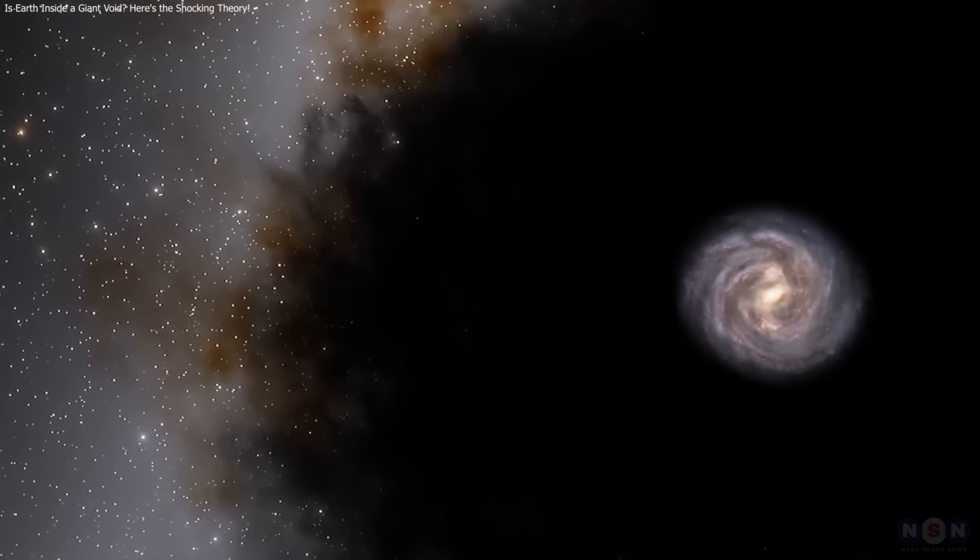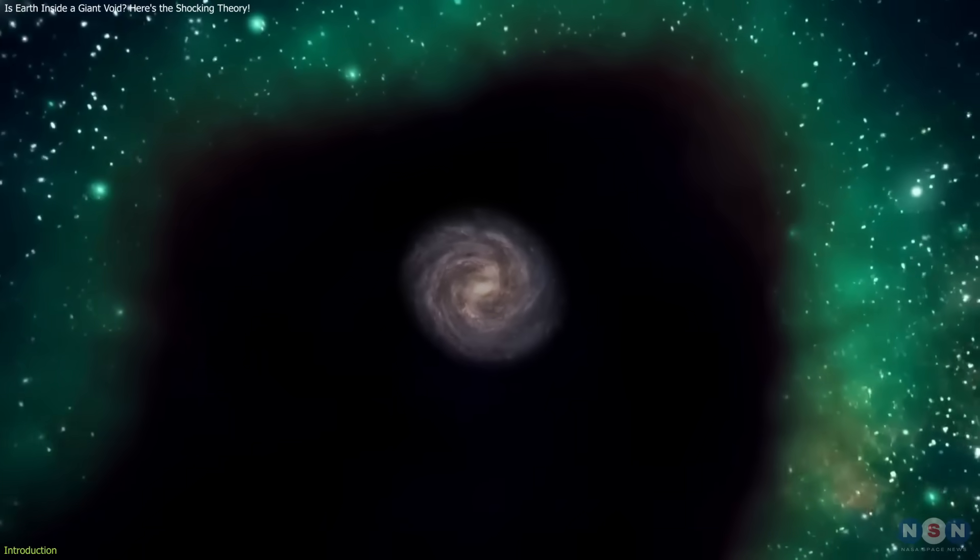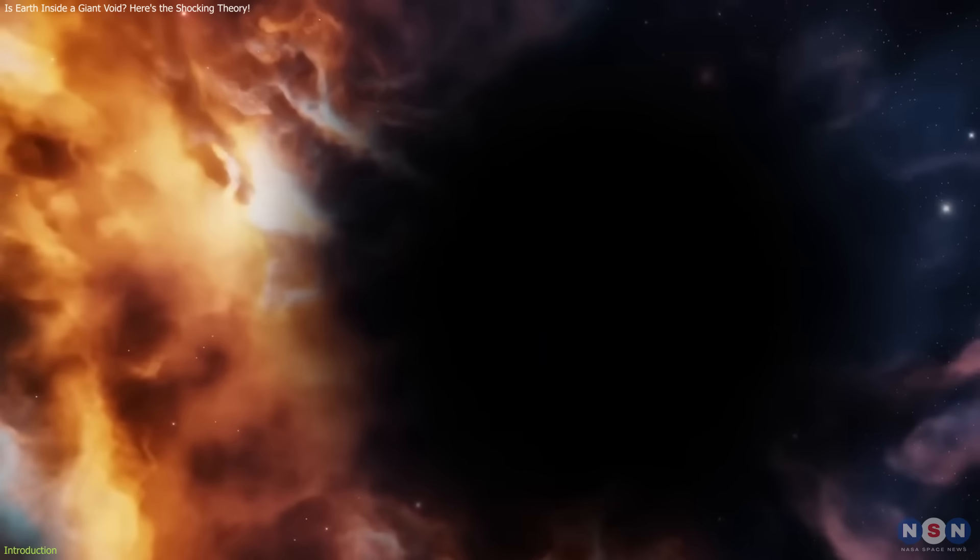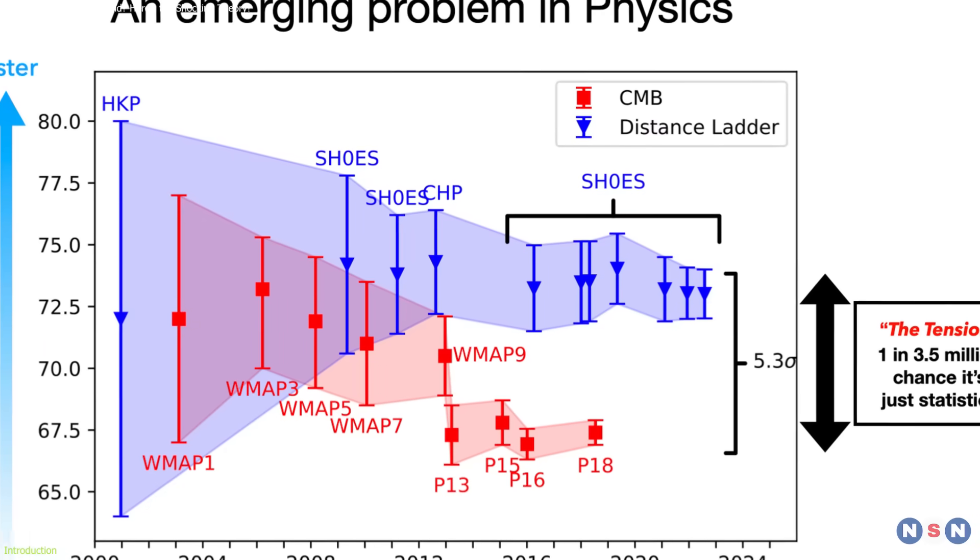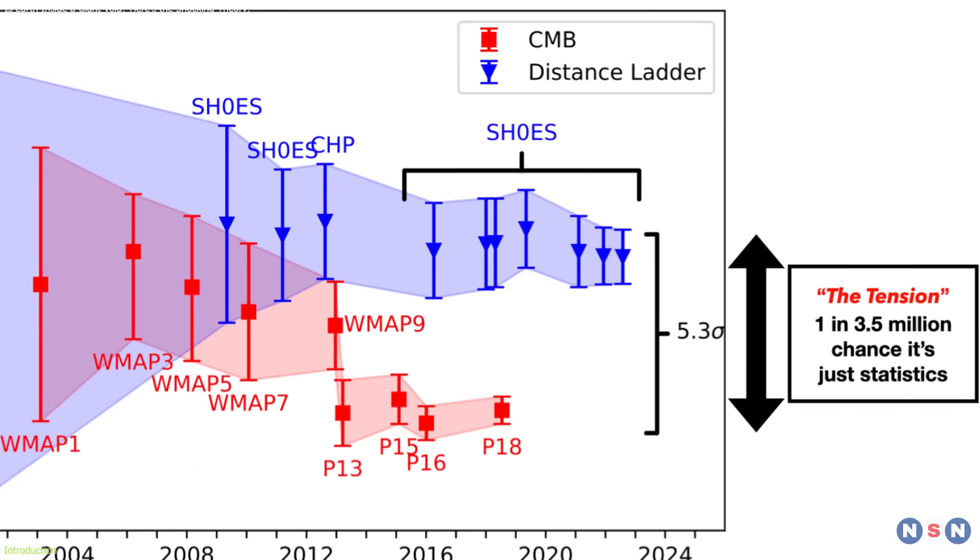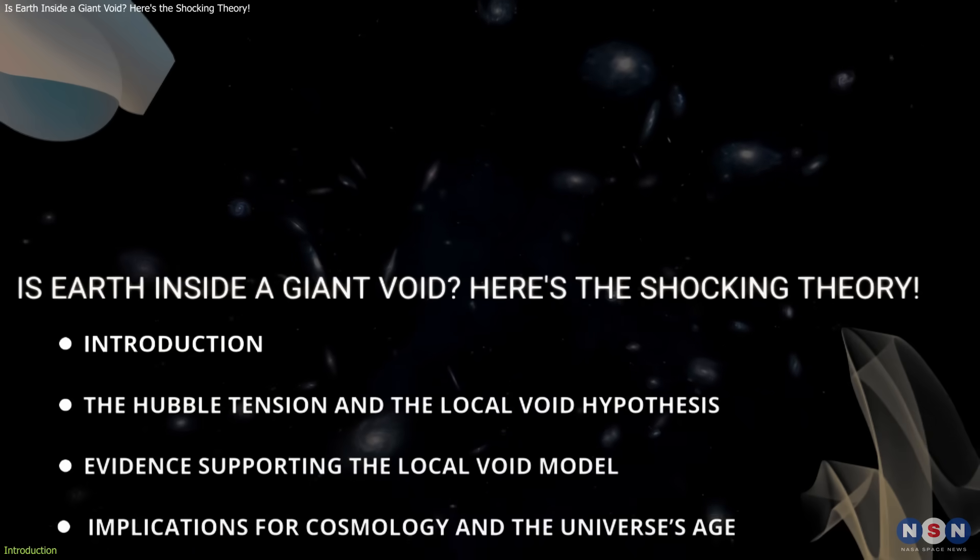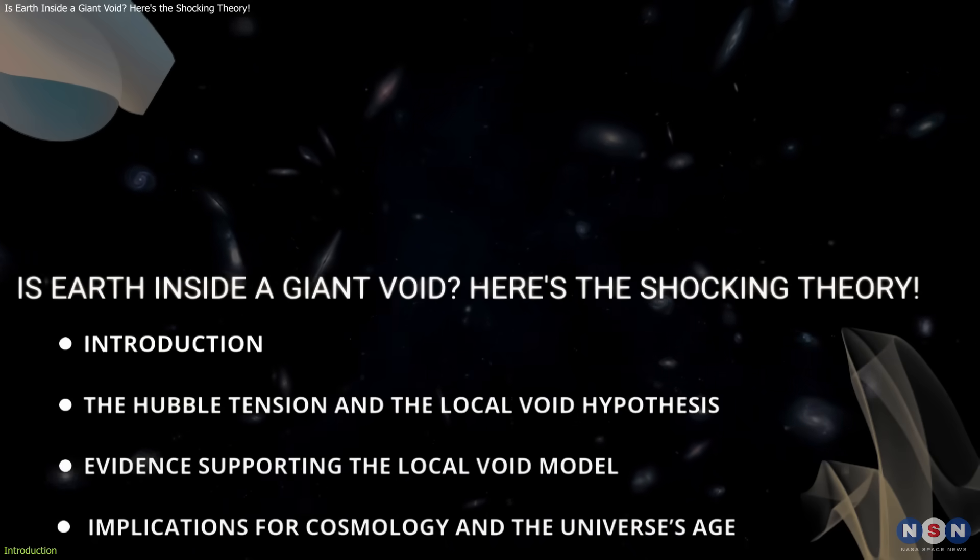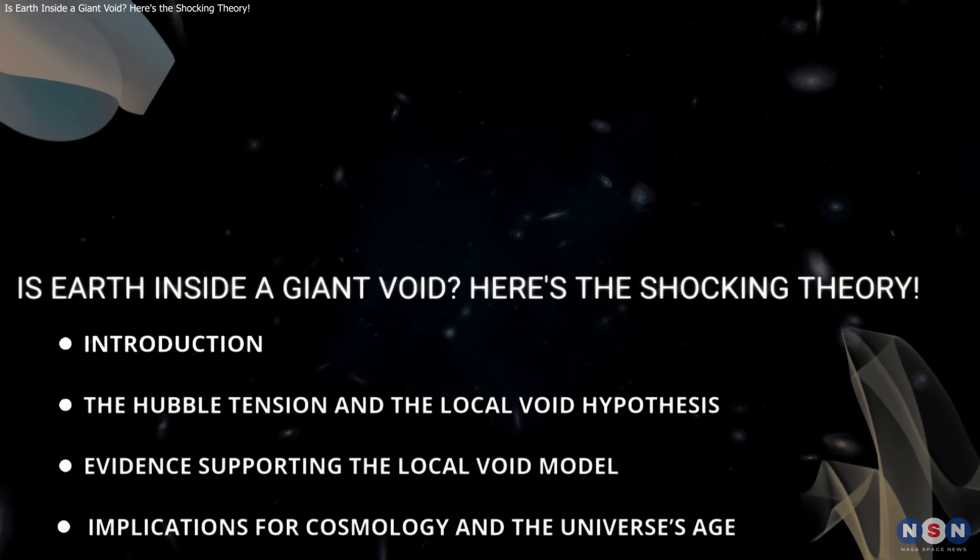Recent research suggests Earth and the Milky Way may lie near the center of a massive cosmic void. This under-dense region could explain the Hubble tension, the mismatch between the universe's expansion rate measured from early light and local galaxies. The void's gravitational effects may make nearby galaxies appear to move faster, offering a potential solution supported by cosmic sound wave data.